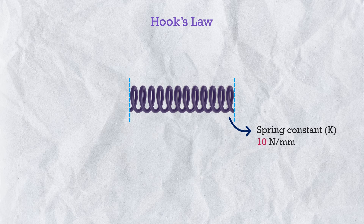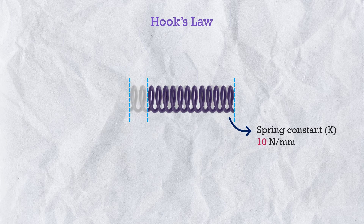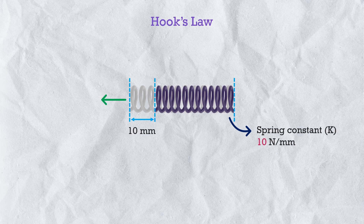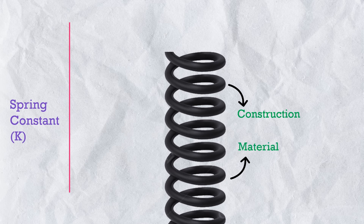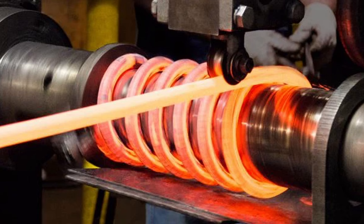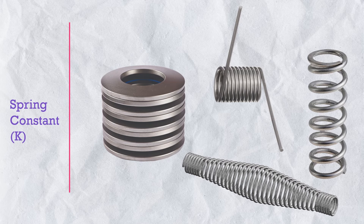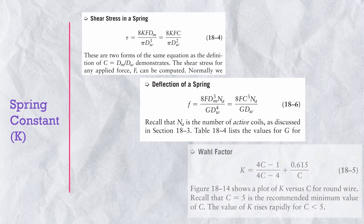Likewise, if the spring constant K is 10 N/mm, then after pressing only 5 mm the reaction force becomes 50 N, and after pressing 10 mm the reaction force becomes 100 N. So we can say the spring constant indicates the stiffness of a spring. The spring constant K depends on multiple parameters: mainly the construction and material of the spring — like overall diameter, wire diameter, material and its treatment, and the shape and design. There are formulas that define the relation between the spring constant K and other parameters, but as a machine design engineer, I have never had to use these formulas, because I am not a spring design engineer.